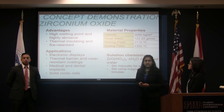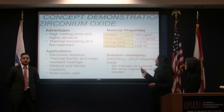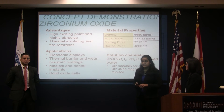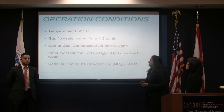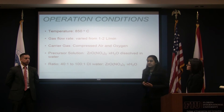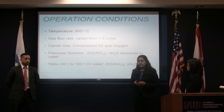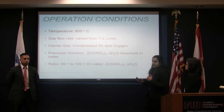Zirconium oxide has a high melting point, is highly abrasive, thermally insulating, and fire resistant. Applications include electronic displays, coatings, medical and dental implants, and solid oxide cells. On your right you can see a material properties chart of zirconium oxide. The solution we used was zirconium dinitrate oxide hydrate dissolved in water at varying ratios. Our operating conditions include the furnace set to 850 degrees Celsius, gas flow rate varied from one to two meters per minute, and carrier gas varied between compressed air and oxygen. We started mixing manually for a minute and then used a magnetic stir plate for five minutes, with the water-to-precursor ratio varied from 40:1 to 1:2.